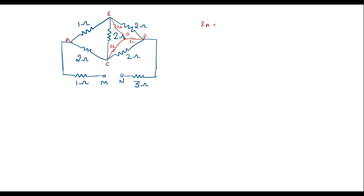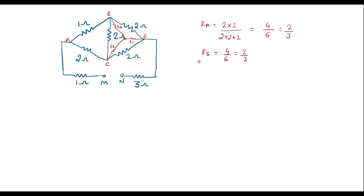To find R_A, we convert this delta into star. R_A equals the product of adjacent resistors divided by the sum of all resistors. Adjacent to R_A we have 2 and 2, so R_A = (2 × 2) / (2 + 2 + 2) = 4/6 = 2/3. Since all resistor values in the delta are the same, all star values will also be the same. Therefore, R_B = (2 × 2) / (2 + 2 + 2) = 4/6 = 2/3, and R_C = (2 × 2) / (2 + 2 + 2) = 4/6 = 2/3.